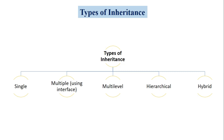Hey everyone, in today's video tutorial we are going to discuss about hybrid inheritance in C# .NET with an example. As you know, there are 5 types of inheritance in C# .NET: single inheritance, multiple, multilevel, hierarchical, and hybrid inheritance.